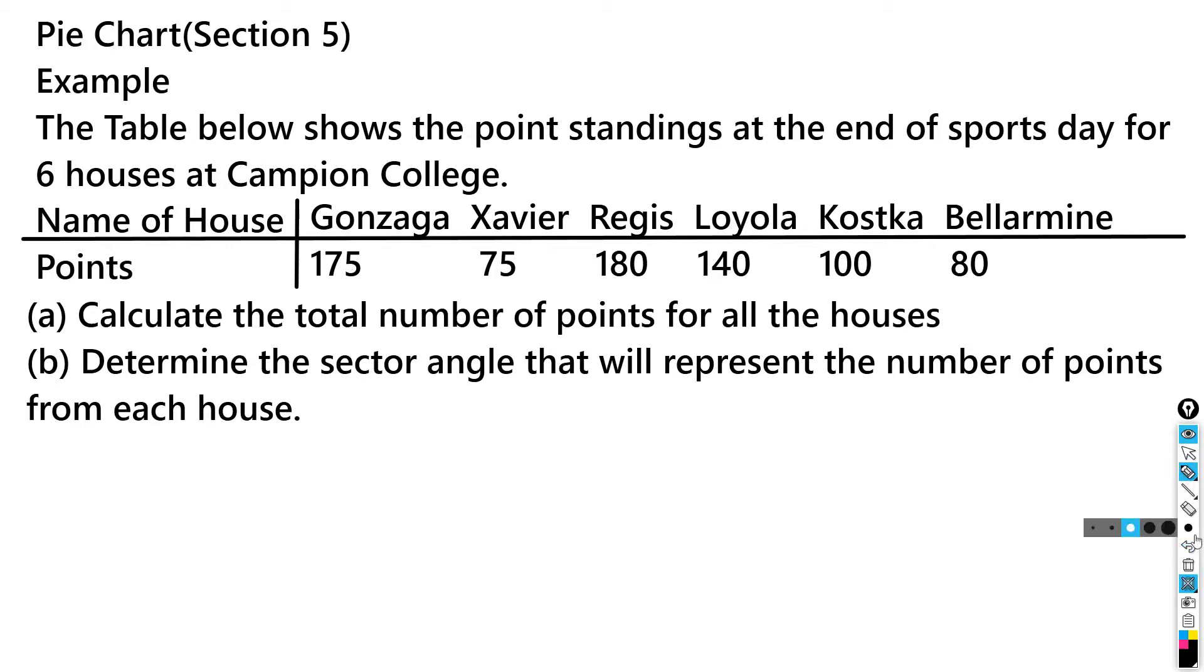The table below shows the point standings at the end of sports day for six houses at Campion College. The names of the houses are Gonzaga, Xavier, Regis, Loyola, Kostka, and Bellarmine, and these are the point standings.